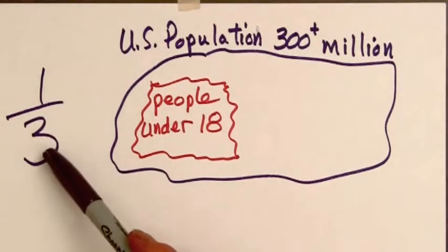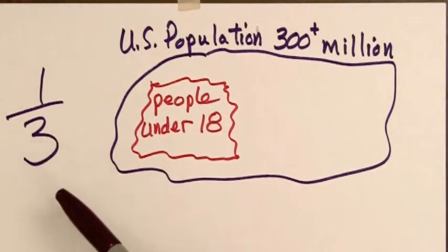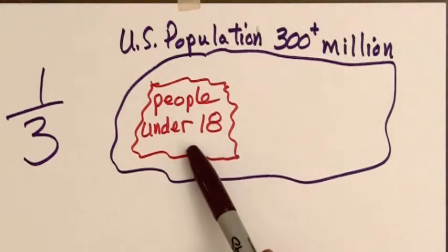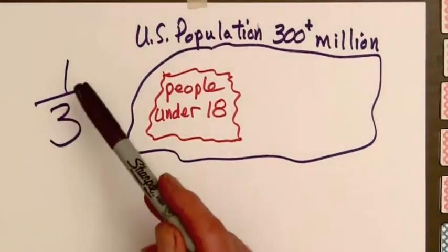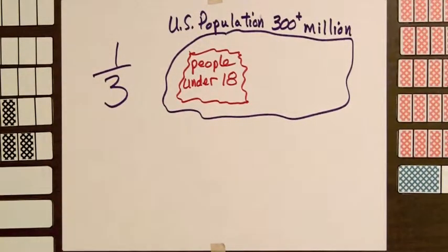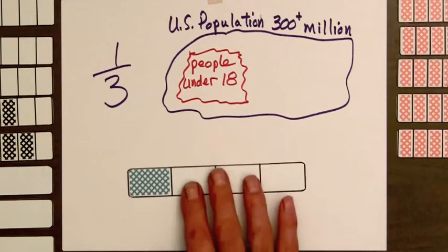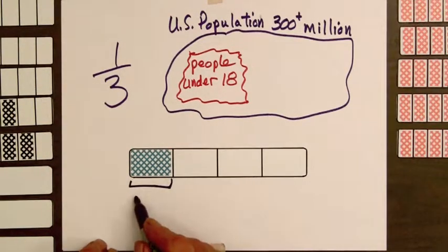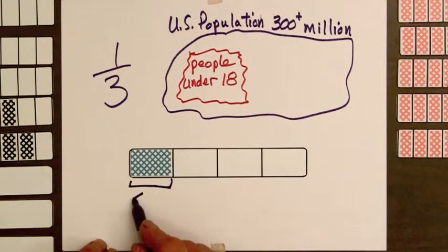The ratio 1 third can be used to find the fraction or percent of the U.S. population that is under 18 years of age. The 1 to 3 ratio can be represented as a bar with one shaded part and three parts unshaded. This is the under 18, let's just put down less than 18.